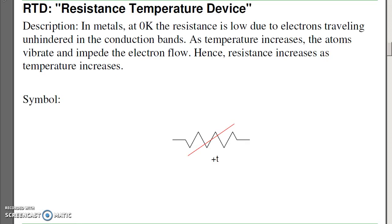Starting out, a resistive temperature device, or RTD. RTDs are made of metal. At zero degrees Kelvin, the resistance is very, very low because the electrons are traveling unhindered in the conduction bands. As temperatures increase, the atoms start moving around, impeding the flow of the electrons. Hence the resistance goes up with temperature.